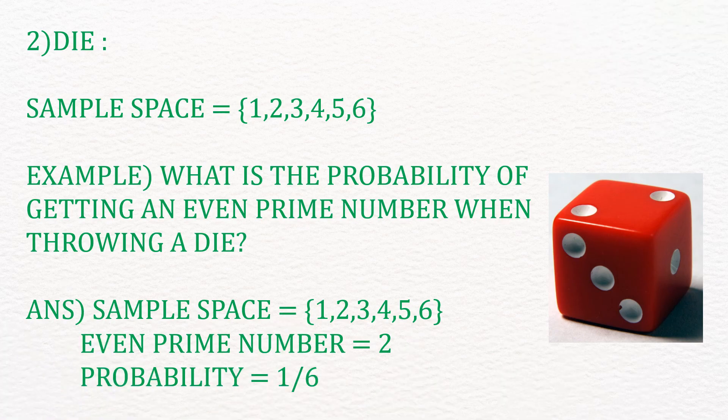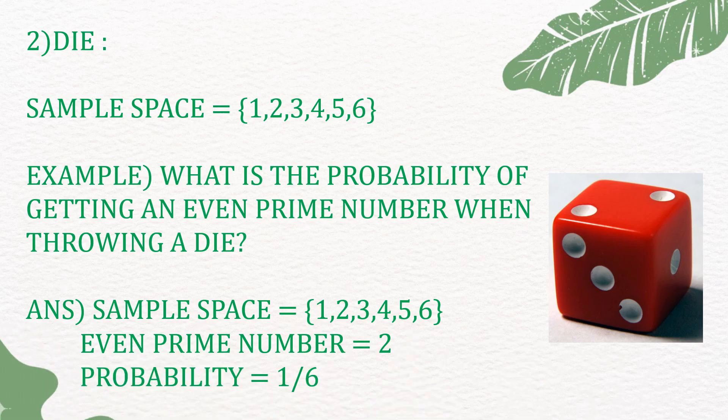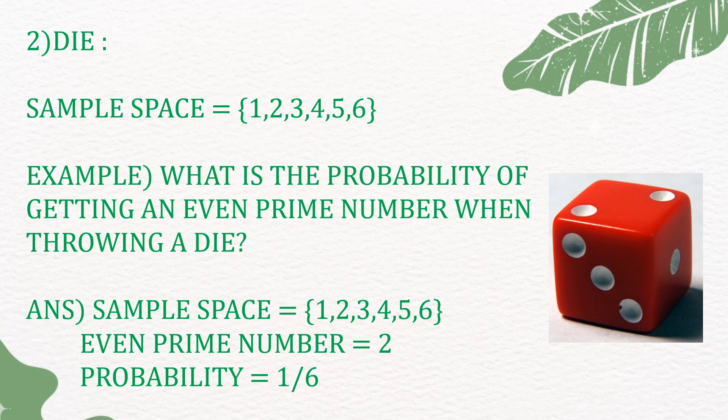For example, what is the probability of getting an even prime number when throwing a dice? The sample space is {1, 2, 3, 4, 5, 6} and the even prime number in the sample space is 2. Therefore, the probability is 1/6.